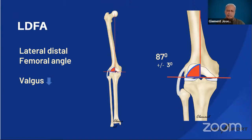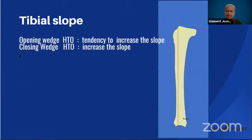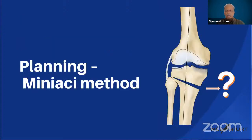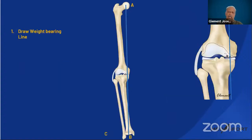The mechanical lateral distal femoral angle (mLDFA) is between the mechanical axis of the femur and the distal femoral joint line — it will be decreased in a valgus knee. One should also assess the tibial slope. With an opening-wedge osteotomy, there is a tendency to increase the slope; with a closing-wedge osteotomy, the slope tends to decrease. The aim of planning is to determine in millimeters exactly how much to open the osteotomy. We will be using the Miniachi technique.